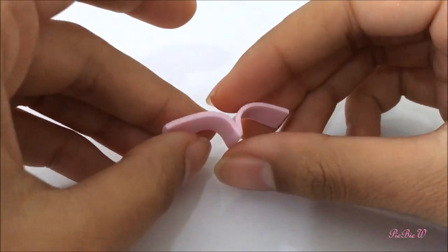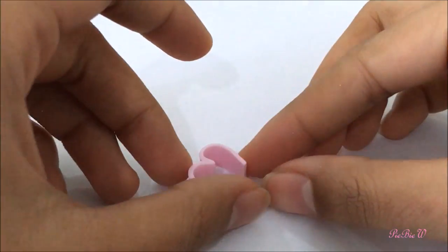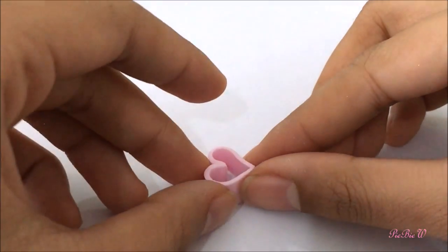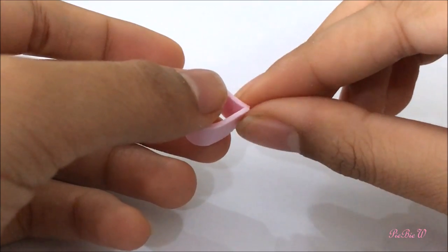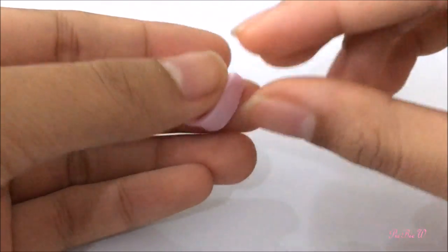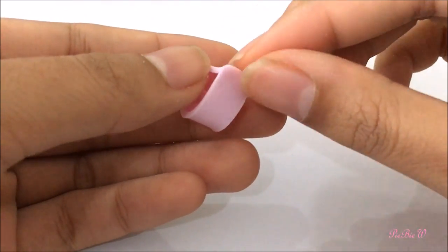Now for the two remaining edges we're going to connect them thus making a heart. And once again pinch them and blend it in. And you're going to want to bake this according to your package's instructions.